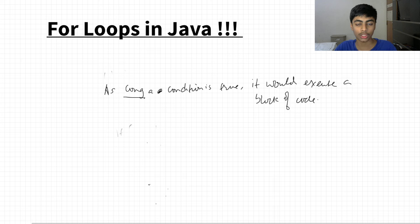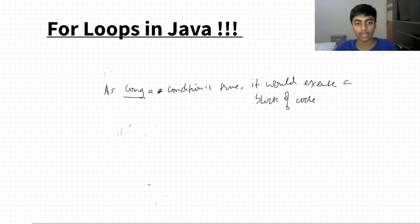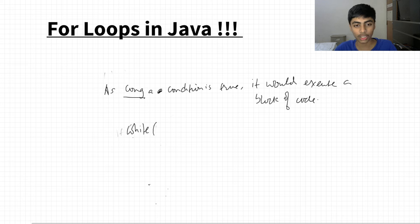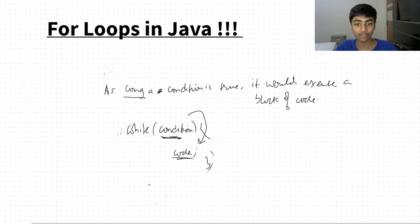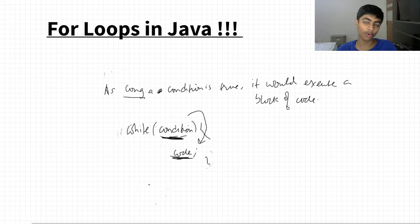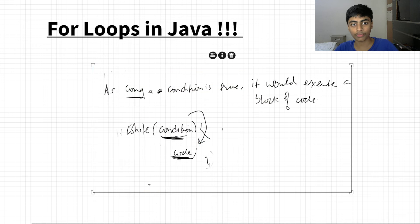I made a video on while loops — I recommend checking that out, though you can still understand for loops without it. In a simple while loop written in plain English: 'while condition, execute block of code.' The while loop checks the condition, executes the code, then checks the condition again. If it's still true, it executes again — repeatedly, as long as the condition stays true.